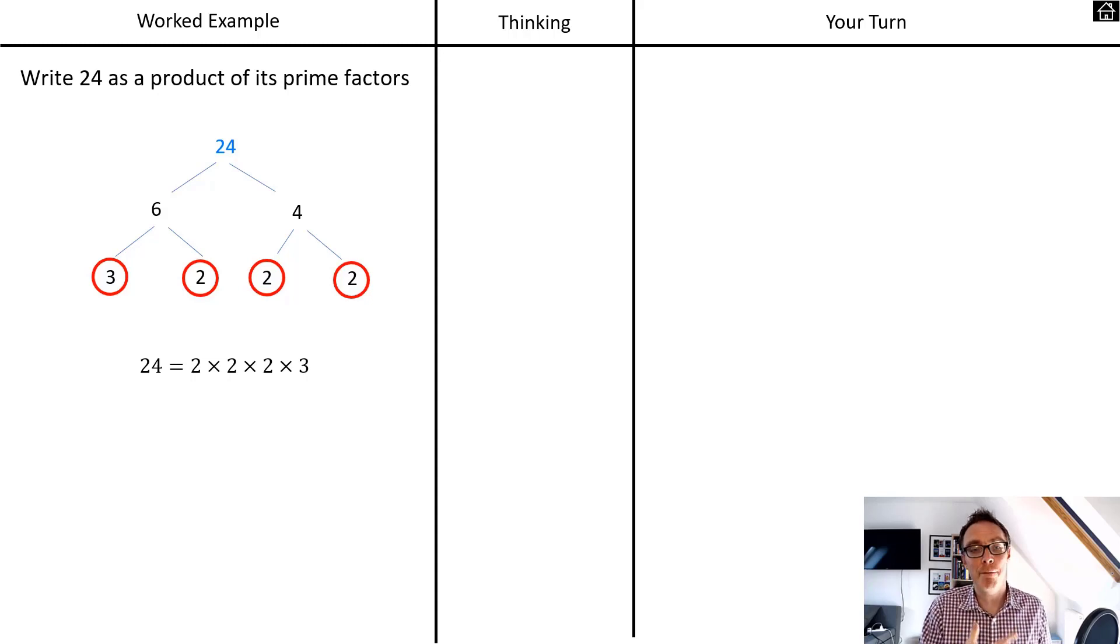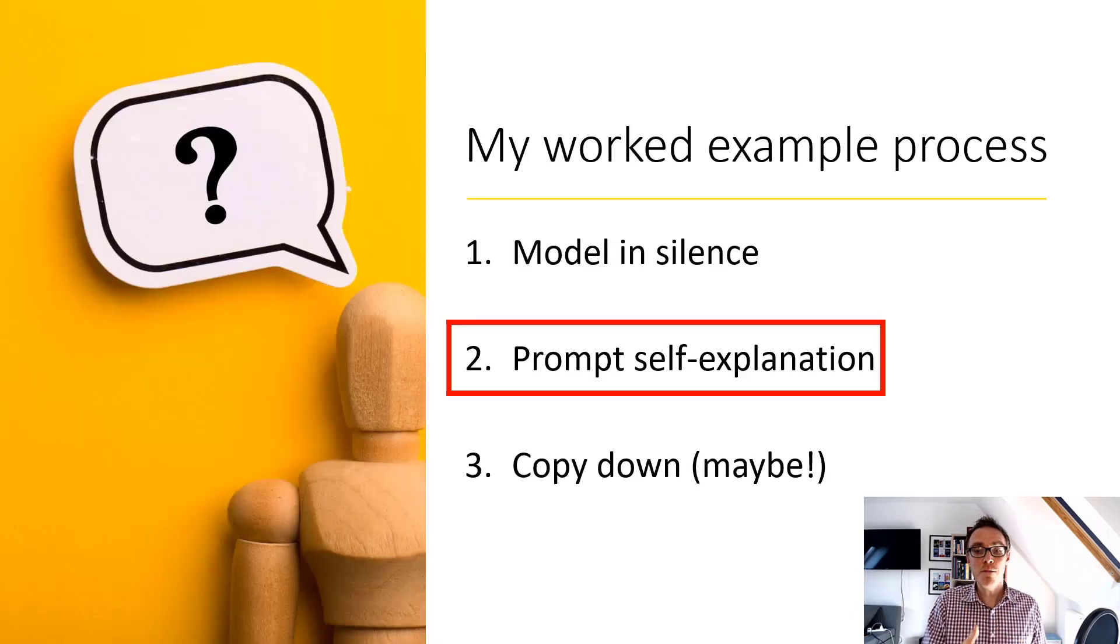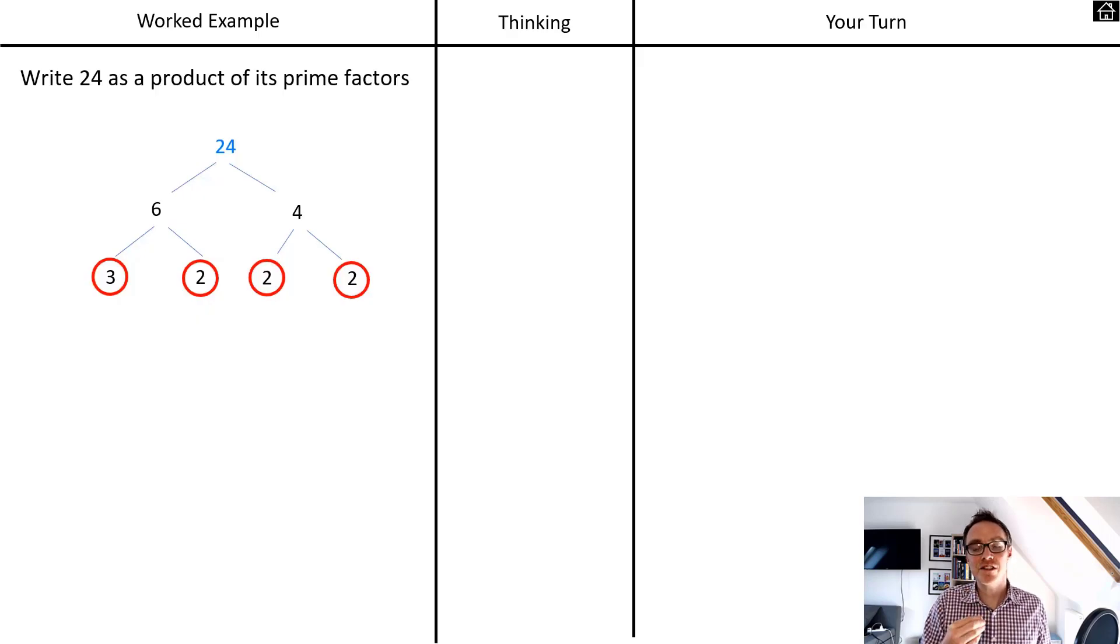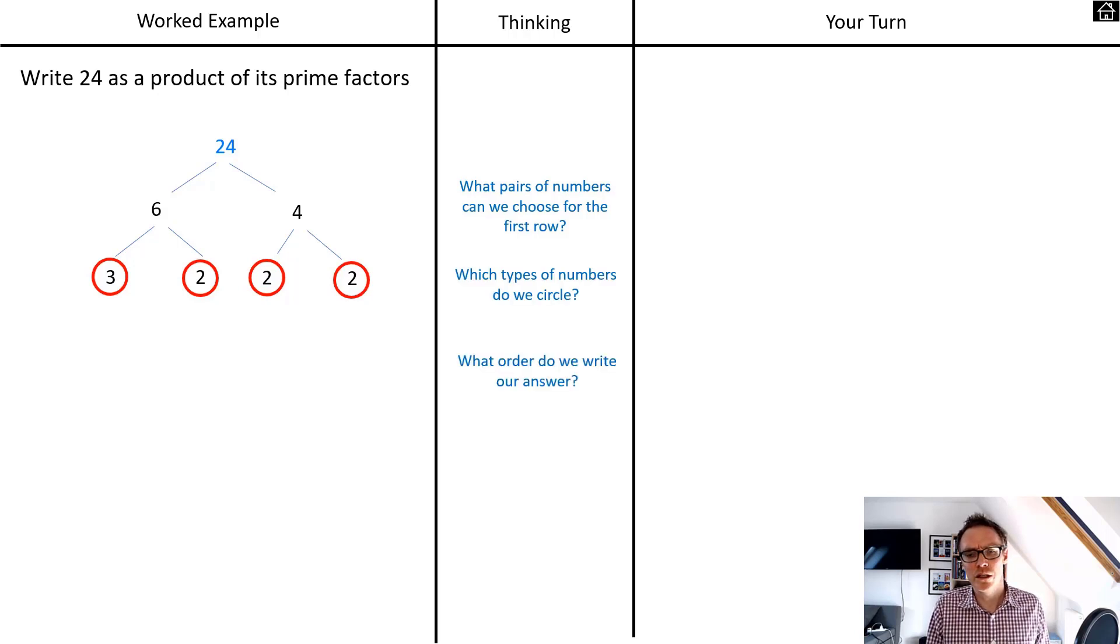Once I've gone through that model in silence, I then move on to the second part, which is where I want to prompt self-explanation. This is where I would ask the kind of questions that normally I would have bundled together with my silent model. Things like: What pair of numbers can we choose for that first row? Was it just six and four? What's special about six and four? Could we have chosen some other numbers? Which type of numbers do we circle? And what order do we write our final answer?